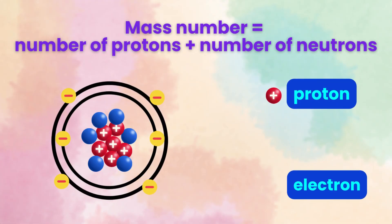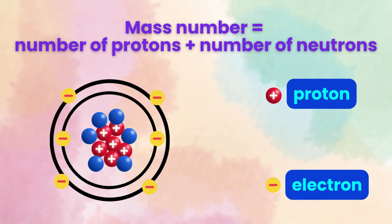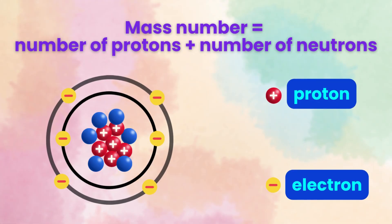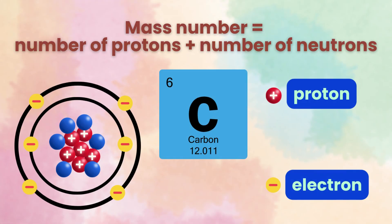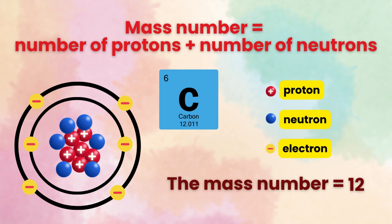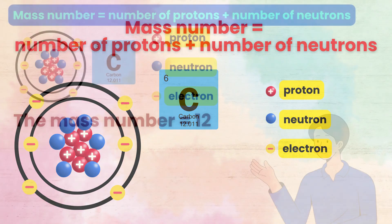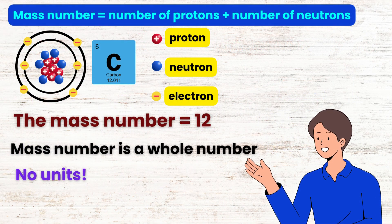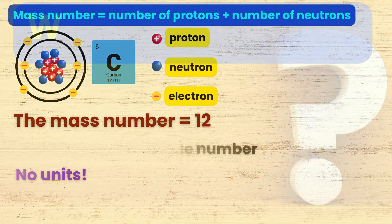Here is an atom with six protons and six electrons, so it is a carbon atom. It also has six neutrons, so the mass number equals 12. And mass number is a whole number with no units.